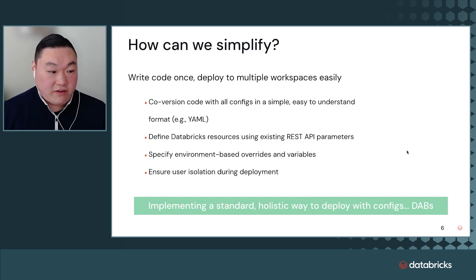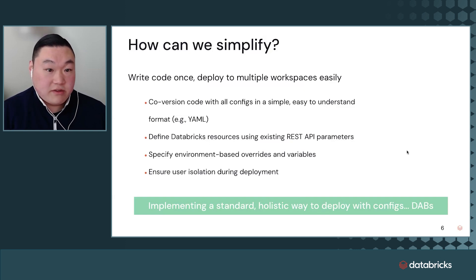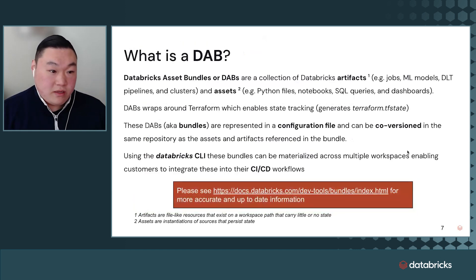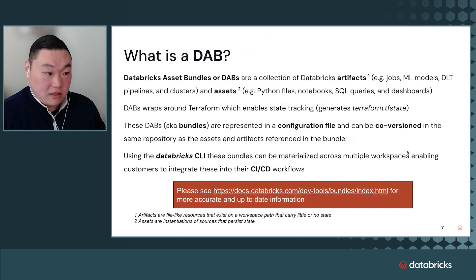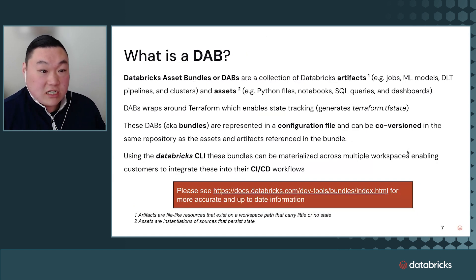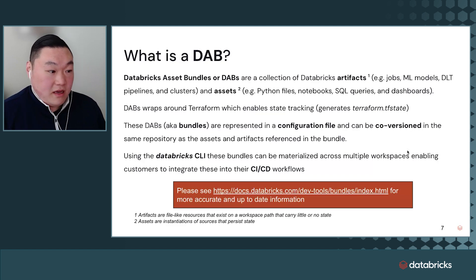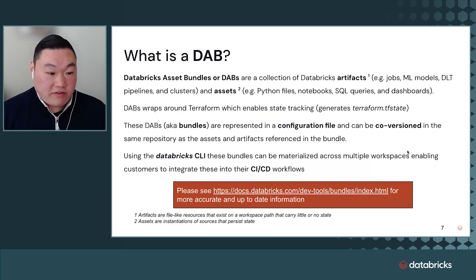We wanted to define Databricks resources using existing REST API parameters so we don't have to learn new lingo around the arguments. We can also specify environment-based overrides and variables — for example in a GitHub Actions environment, you can specify environment secrets that pass along to a specific target, ensuring user isolation. A Databricks Asset Bundle, or DAB, is a collection of Databricks artifacts such as jobs, MLflow models, DLT pipelines, and clusters, as well as assets like Python files, notebooks, SQL queries, and dashboards. DABs wrap around Terraform, which enables state tracking and generates a Terraform TF state. These bundles are represented in a configuration file and can be co-versioned in the same repository as the assets referenced in the bundle, allowing use of local relative paths.